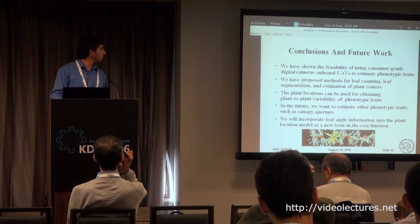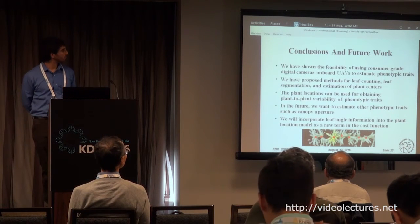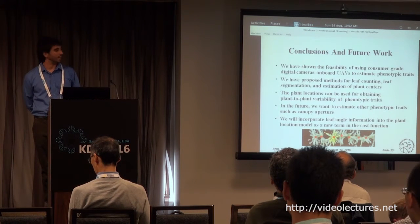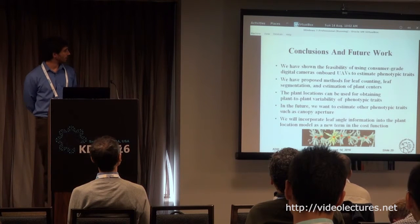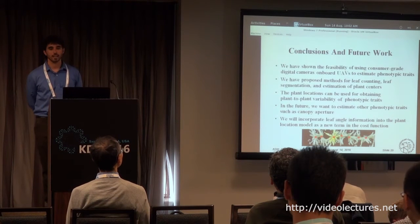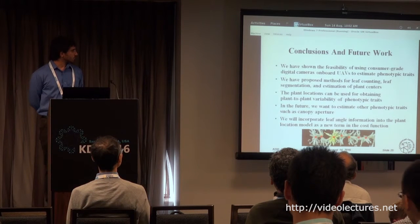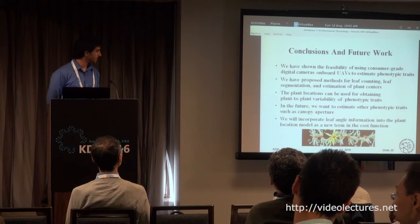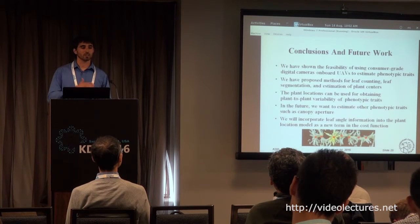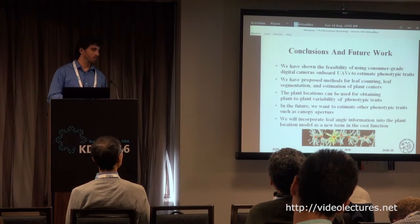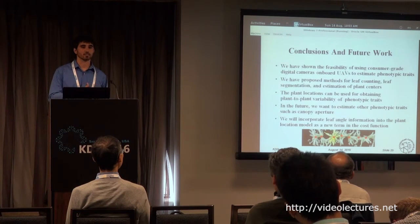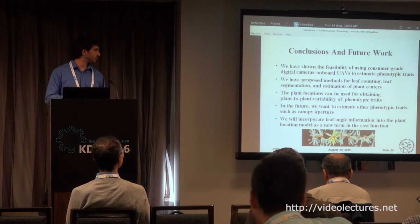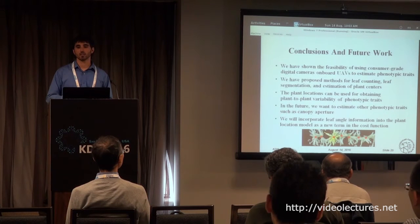As a conclusion, we have shown the feasibility of using consumer-grade digital cameras on UAVs to estimate phenotypic traits, and we have proposed three methods: one for leaf counting, one for leaf segmentation, and one for the estimation of plant centers. We want to use the plant locations to obtain plant-to-plant variability of phenotypic traits. As for future work, we want to estimate other phenotypic traits like canopy aperture. We also realize that sorghum pixel positions are not all the information we have about the plant centers — in fact, the leaf angle shows a lot of information about where the plant center is, as leaves usually grow from the stalk and point towards it. So we want to incorporate leaf angle information into the plant location model as a new term in the cost function.